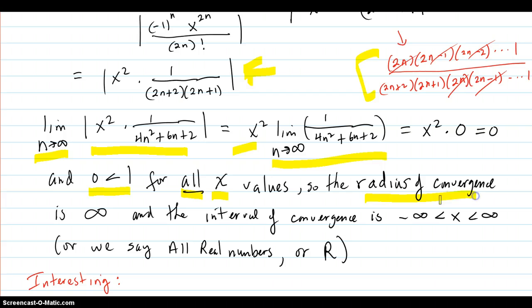And that happens to be less than one for all x values. So the radius of convergence is infinity, and the interval of convergence is negative infinity less than x and less than infinity. In other words, all real numbers, or we just say, converges on R.